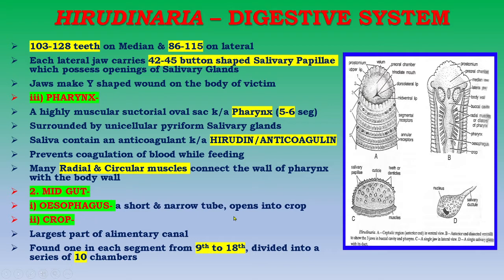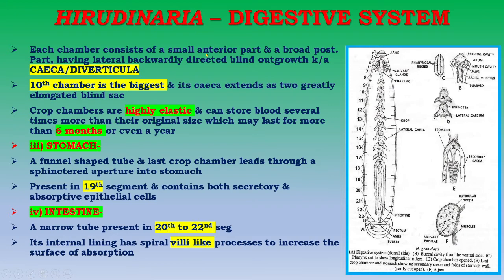The second part of the alimentary canal is the midgut, which includes the esophagus — a short narrow tube that opens into the crop. The crop is the largest part of the alimentary canal, found in segments 9 to 18, and is divided into a series of 10 chambers. Each chamber consists of a small anterior part and a broad posterior part having lateral, backwardly directed blind outgrowths known as caeca or diverticula.